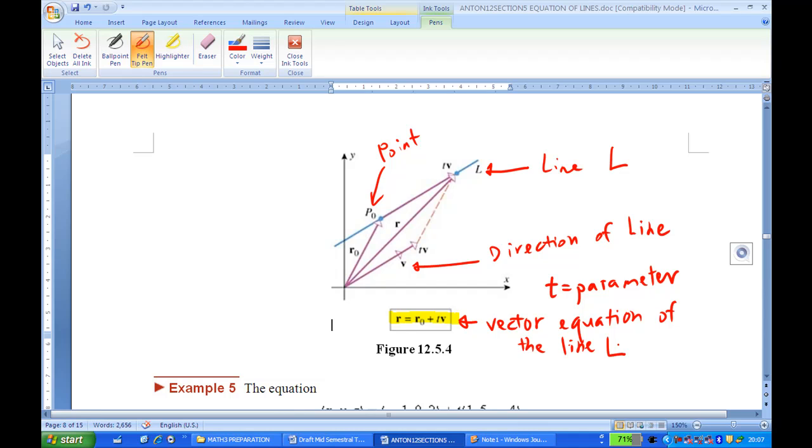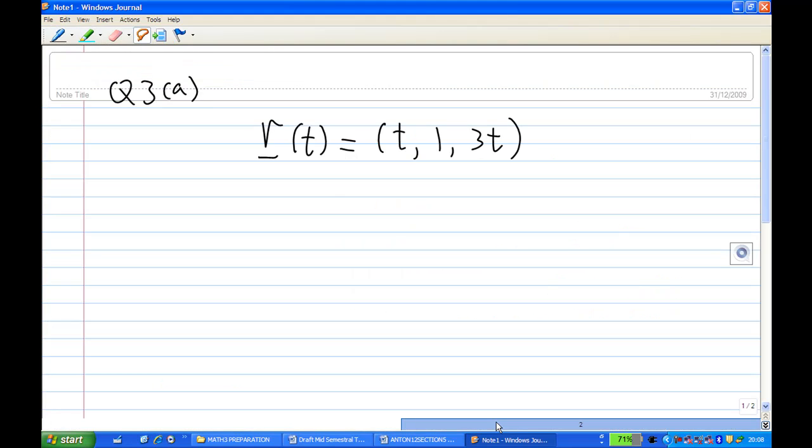Once you understand this, then we can go ahead and do question 3a. In this case the equation of a line is (t, 1, 3t). Now we can write them as separating the terms with t and terms without t. So the term with t you put together, and the term without t.